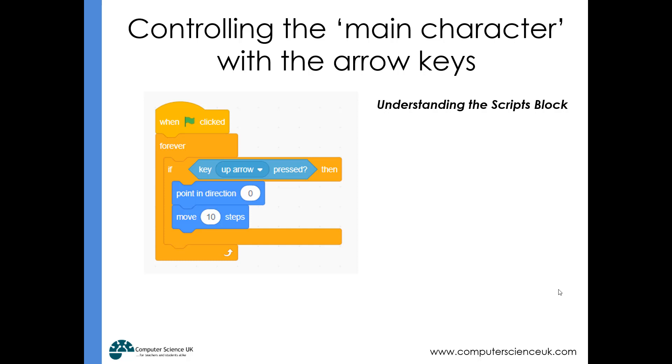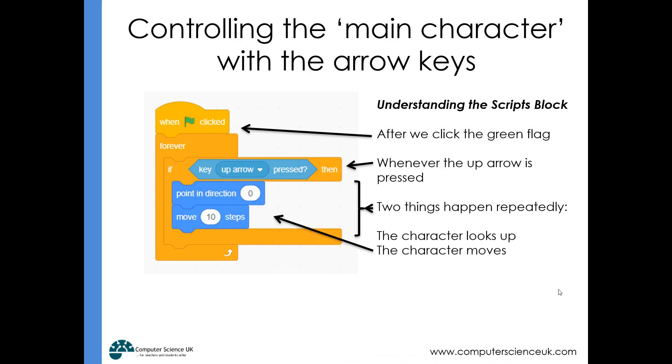In terms of understanding how this block works, the code starts when we click the green flag, then it forever checks to see if the up arrow key is pressed. If it is pressed, the sprite points in direction zero, which means upwards, and then moves in that direction. It constantly checks if the up arrow key is pressed—if it is, it points upwards and moves 10 steps; if not, nothing happens.